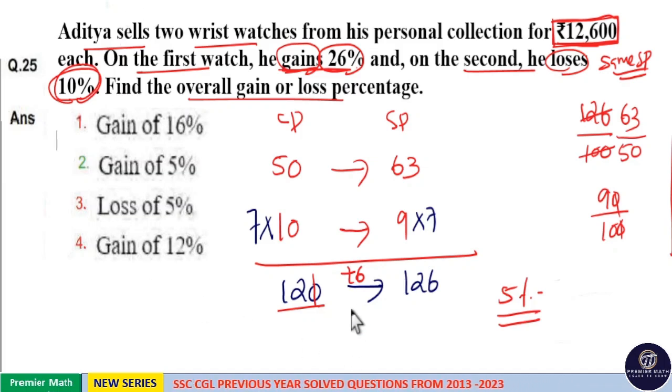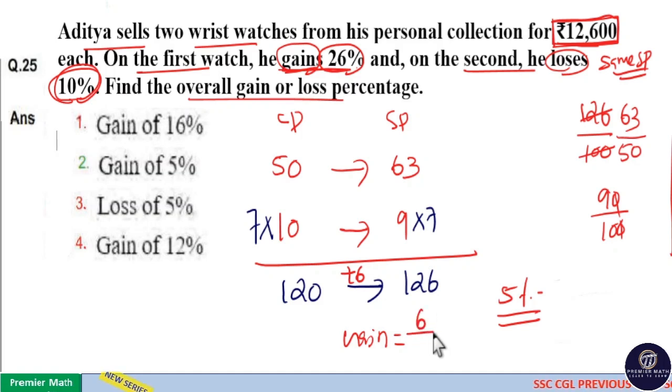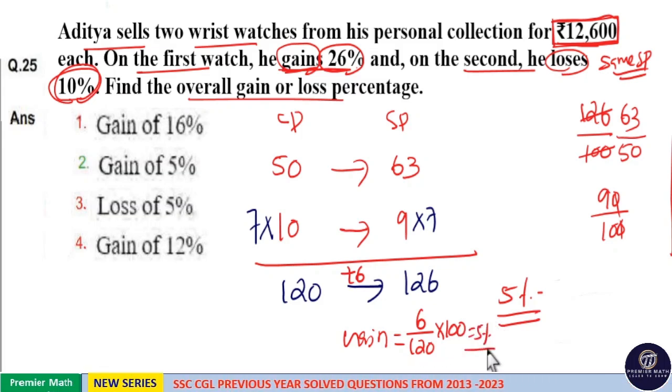That is, here, the gain is the difference between selling price and cost price, which is 6. This 6 part is generated from this cost price 120. So, 6 by 120 into 100 is equal to 5 percentage. So, this is gain.